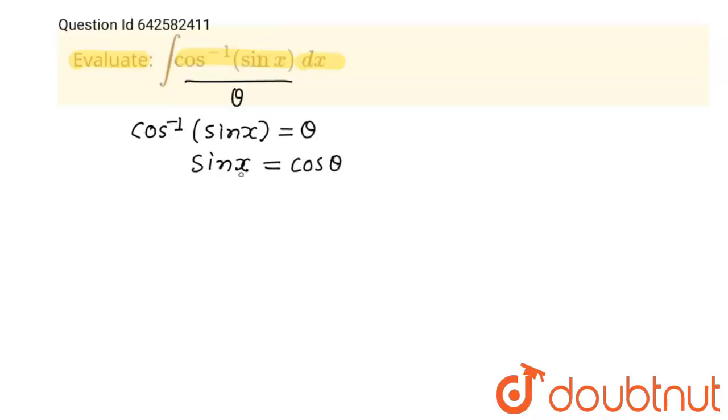We know that sin 90 minus theta is cos theta. So we can write this x is equal to 90 minus theta. When the value of x will be 90 minus theta, then only we can say sin x is equal to cos theta.